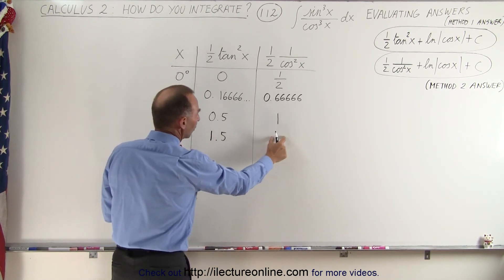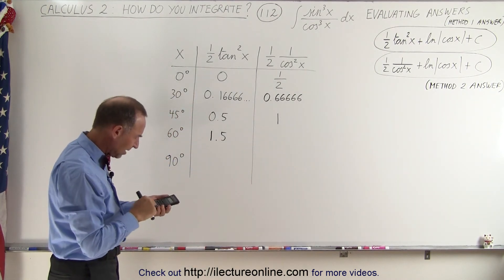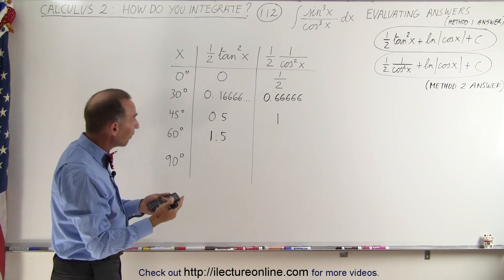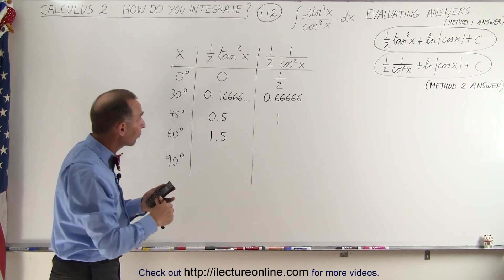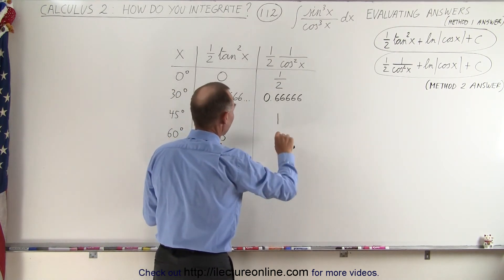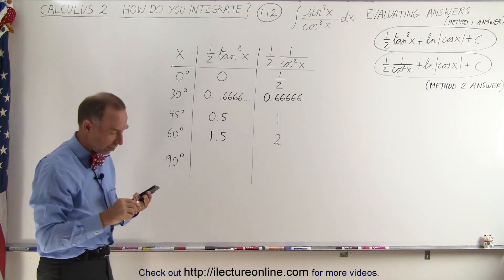And so if the pattern holds, the result here should be equal to 2. Let's see if we get that. So we take 60, take the cosine of that is 0.5, we square that, 0.25, take the inverse, which is equal to 4, times one half is 2. And again, notice the answer is exactly 0.5 larger than it is here.